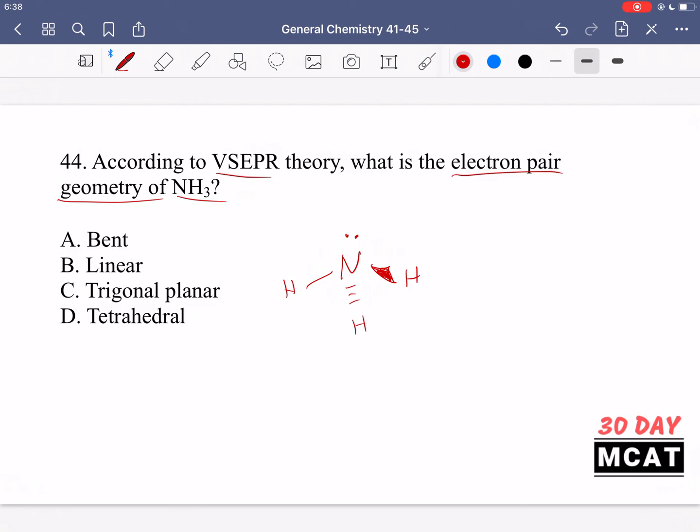If we were asked for the molecular geometry that would be trigonal pyramidal that's not even an option here but we are asked the electron pair geometry which is D tetrahedral. If you have four pairs of electrons around you you are tetrahedral you have four objects around you and then if we think about the molecular geometry which is the actual shape of it that's going to be different because now we're considering repulsion as well coming from that lone pair so once again trigonal pyramidal but the answer here for what we're asked electron pair geometry is D tetrahedral.